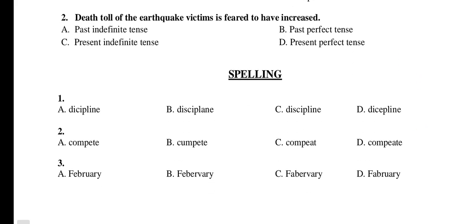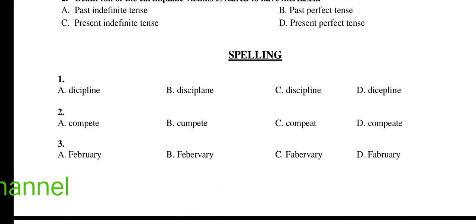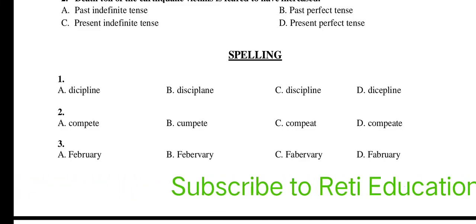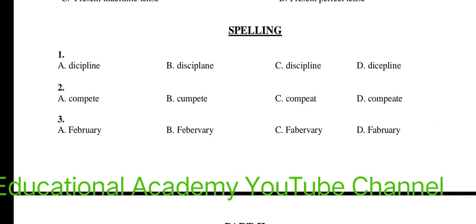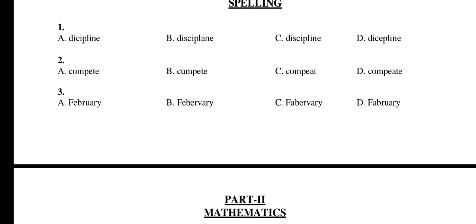Now comes spelling. Question 1: Compete — the right spelling is option C. Question 2: Compete — the right spelling is option A. Question 3: The right option is A. I hope you have liked this video. Kindly share your thoughts in the comment box and also share it with your friends. Thank you.